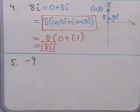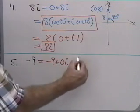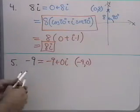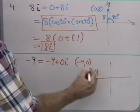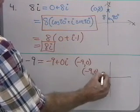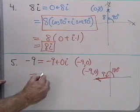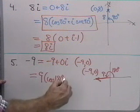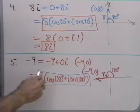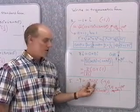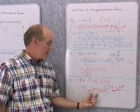Let's look at one last example: −9. In standard form that's −9 + 0i. The graph goes from the origin out to the point (−9, 0). That vector has length 9 and is 180 degrees from the positive x-axis. So in trigonometric form this is 9(cos180° + i·sin180°). The number −9 is a real number, a complex number −9 + 0i in standard form, and can also be written as 9(cos180° + i·sin180°) in trigonometric form.